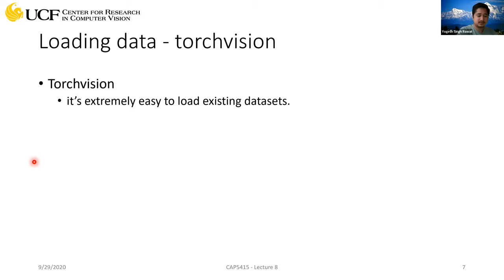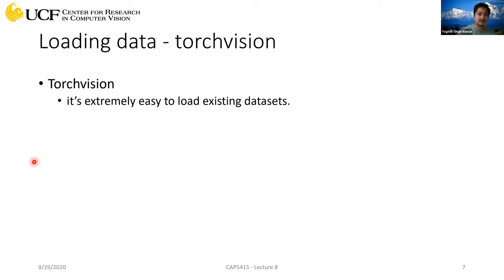Data pre-processing time can be very substantial depending upon what kind of data you are using. If you're using any existing datasets, it might be very trivial — you can use existing APIs which are there in PyTorch as well. But if you have your own data which is not in the library, that's a major investment you will have to make.